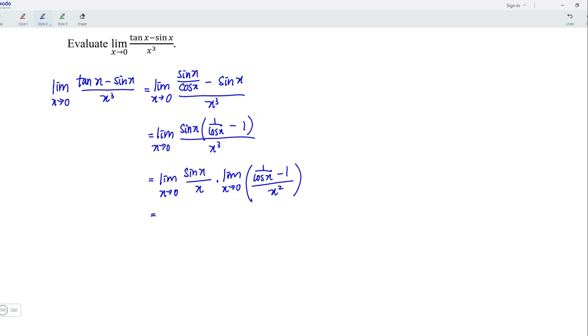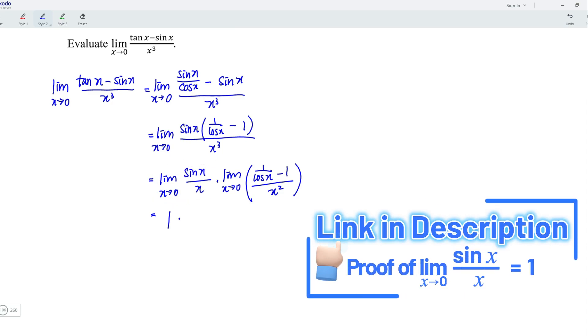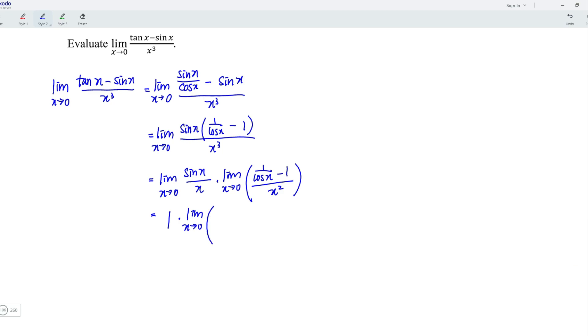As we learned, the limit for the function sine x over x as x approaches 0 is equal to 1 in the previous video. Then the limit can be further simplified as x approaches 0. Let's rewrite the function. We should have 1 minus cos x divided by x squared multiplied by cos x.